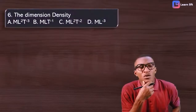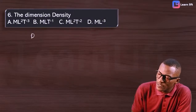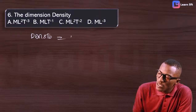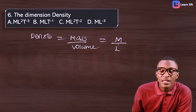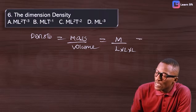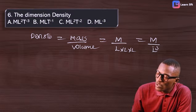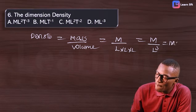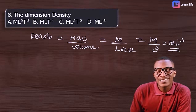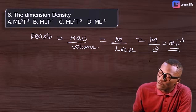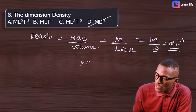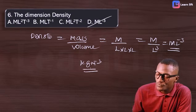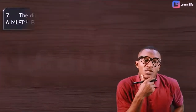What is the dimension for density? Density equals mass over volume. Mass in dimension is M; volume is length × length × length = L³. So density is M over L³, which gives dimension ML⁻³. In units: kilogram per meter cubed, confirming dimension ML⁻³.